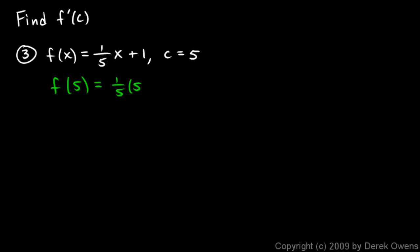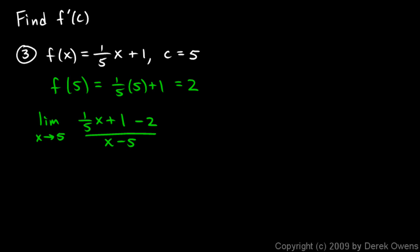f of 5 is 1/5 times 5 plus 1, which is 1 plus 1 equals 2. Then we take the limit as x approaches 5 of f of x, which is 1/5 x plus 1, minus f of 5 which was 2, so minus 2, all over x minus 5. The plus 1 and minus 2 simplify.